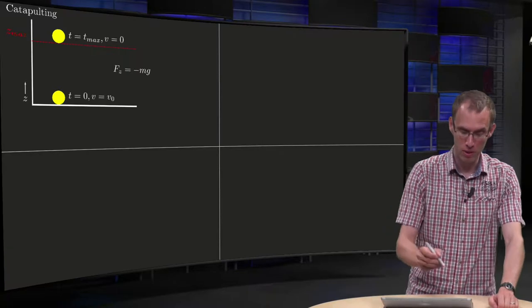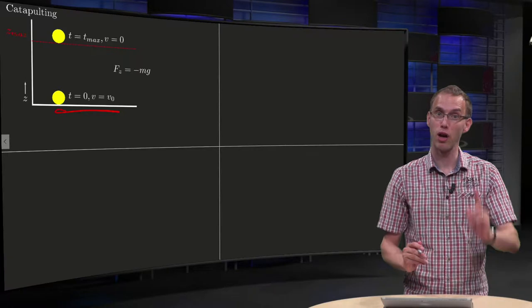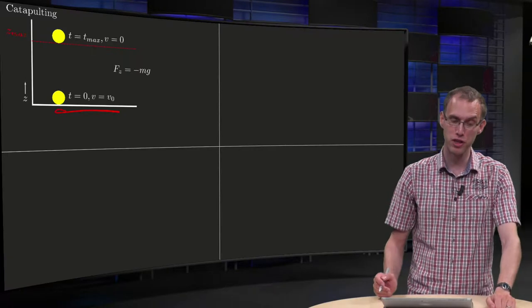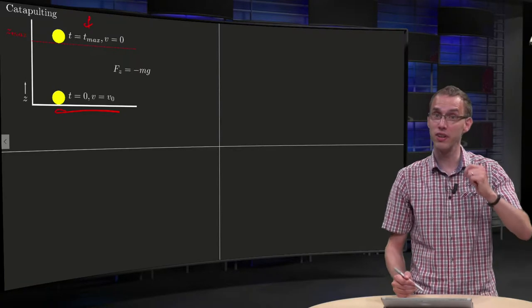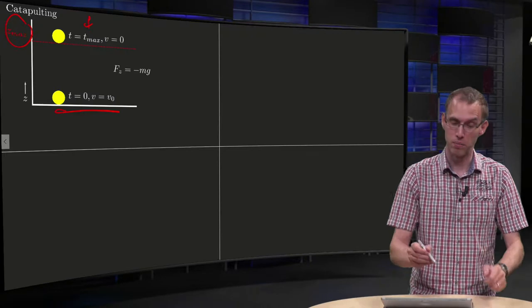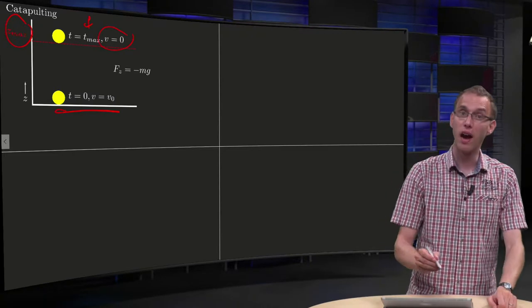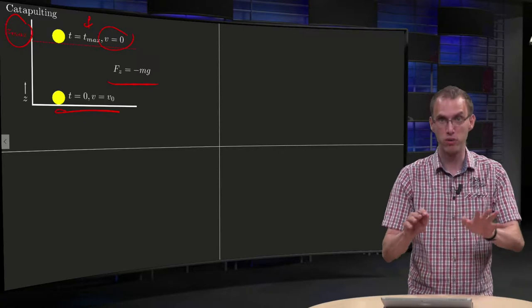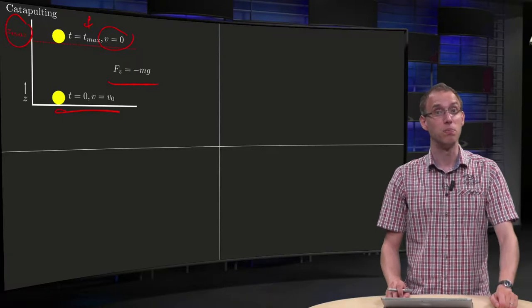So we have our bullet, which sits on the ground at t equals zero, and we shoot it upward with some velocity v0. At a certain time t_max, it will reach its maximum height z_max, and at that moment of course it has v equals zero, and then it falls back. Only force involved is gravity, we will ignore friction. So let us take a look at this model.